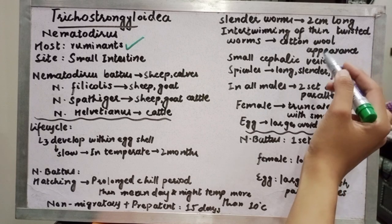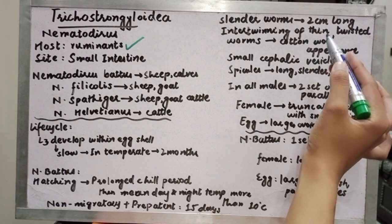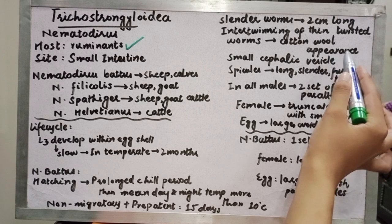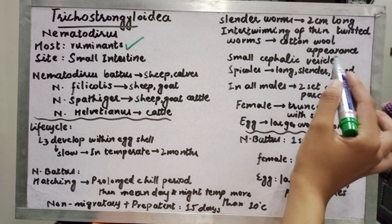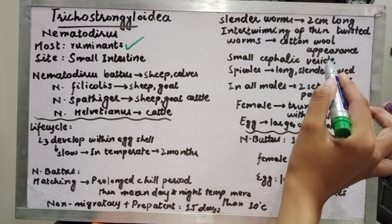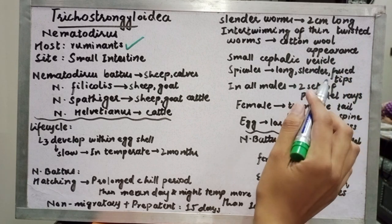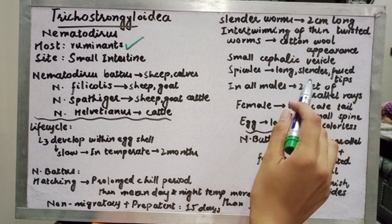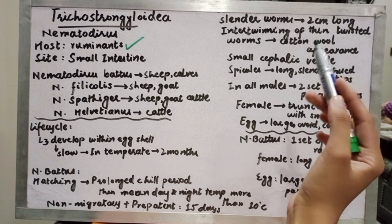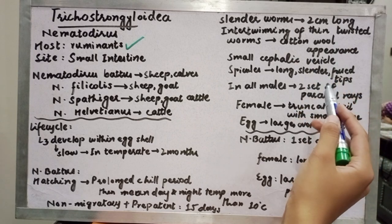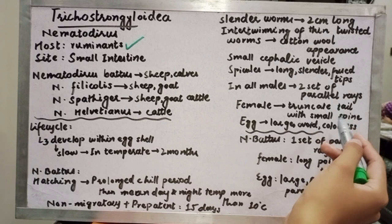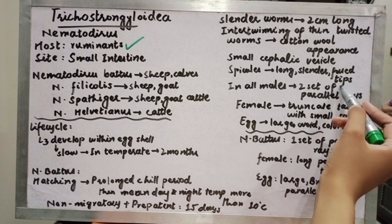Under the microscope, they have a cephalic vesicle where the cuticle is inflated. This cephalic vesicle is long and cylindrical. They also have a fused tip at the anterior end.